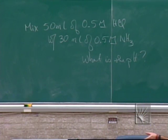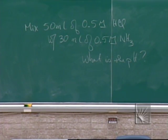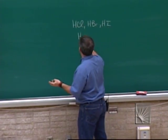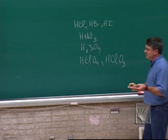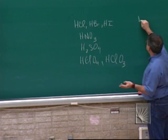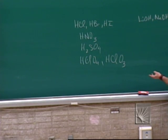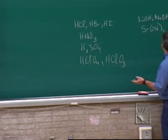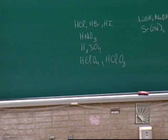HClO3 comes up so seldom that I don't worry about it. So there are seven strong acids: HCl, HBr, HI, HNO3, H2SO4, HClO4, and HClO3. There are also seven strong bases. If it's not on either of these lists, it is weak.